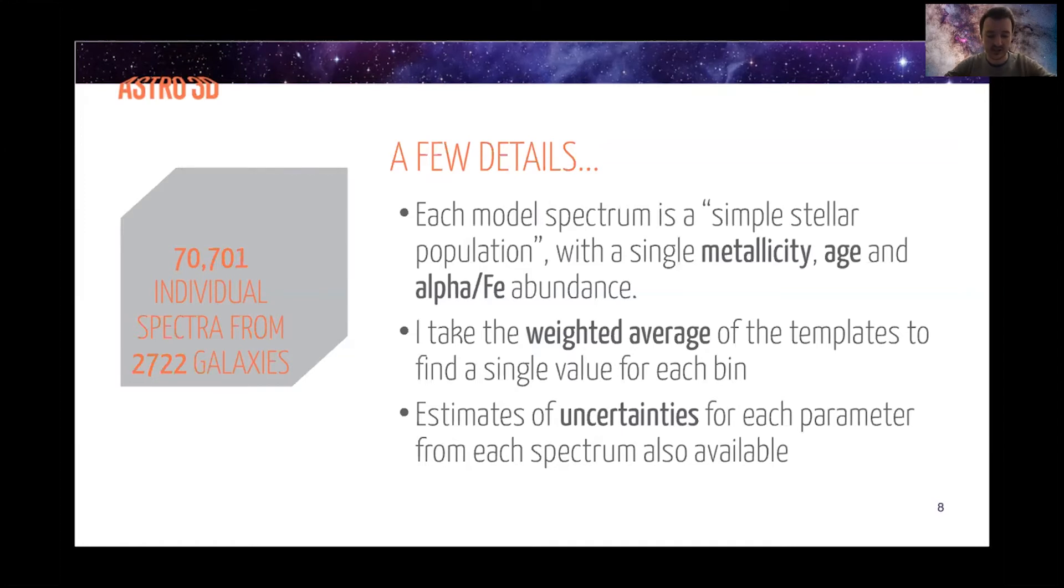You can imagine that the distribution of templates is something approaching a star formation history for each spectrum, but I have to condense down my data from 70,000 star formation histories into 70,000 weighted averages. And finally, I do get estimates of uncertainties for each parameter. I use a bootstrapping in order to get the uncertainties for a small subsample of my spectra, then make a model to predict the uncertainty and apply this model to the rest of my data.